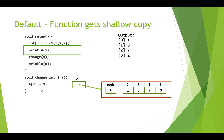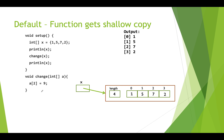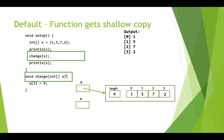We print out the elements of the array, so our output would show the four elements in order: 1, 5, 7, and 2. Now we call change and pass in our array reference variable x. Once we get into change, we create a reference variable called a for the integer array we're passing in, and it gets assigned a copy of the address that's in x. So now a is also pointing at the array that x is pointing at.